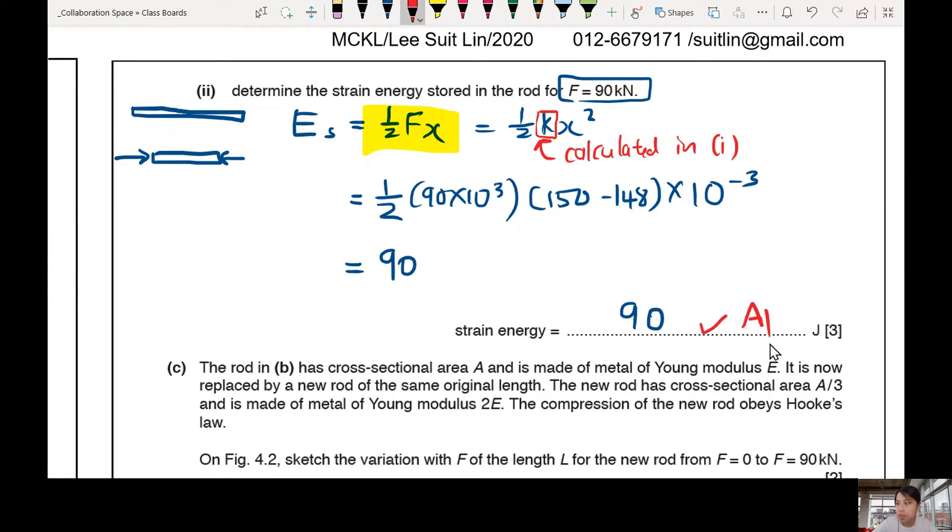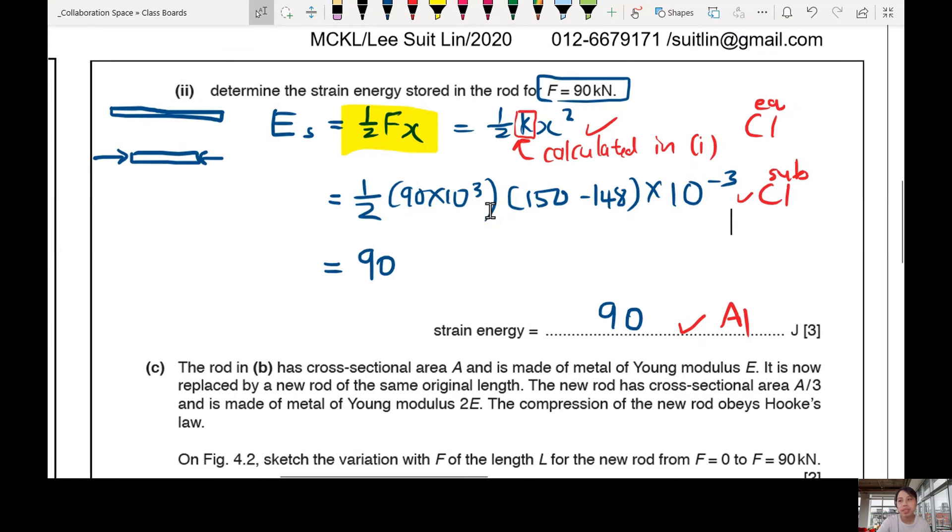One mark for final answer. One for your half KX square or half FX equation. You write that somewhere, give you a mark. And one for correct substitution of values. So this line, you sub in correctly, then you get this one. We see C1 sometimes for equation, sometimes for substitution. Okay now, both is okay. Now the last part.